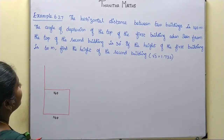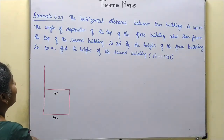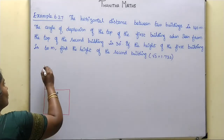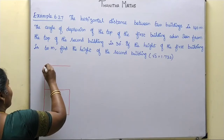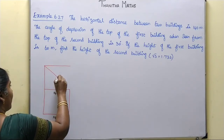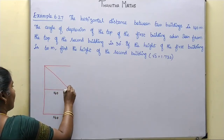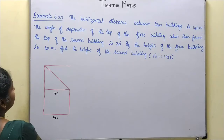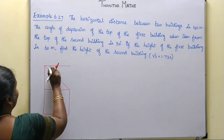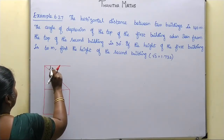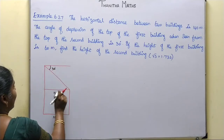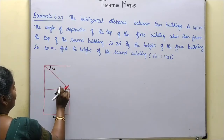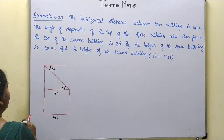The angle of depression from the top of the second building to the top of the first building is 30 degrees. Using alternate angles, this angle at the top of the first building is also 30 degrees.